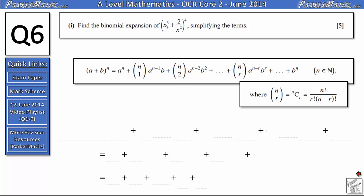a is just the first term in the bracket so a becomes x cubed. b is the second term, 2 over x squared. And n in this case is 4. So all we need to do is substitute these values into the right hand side of this formula here.